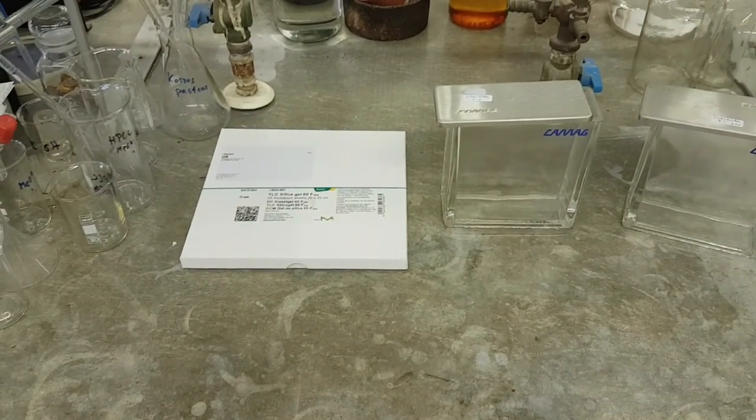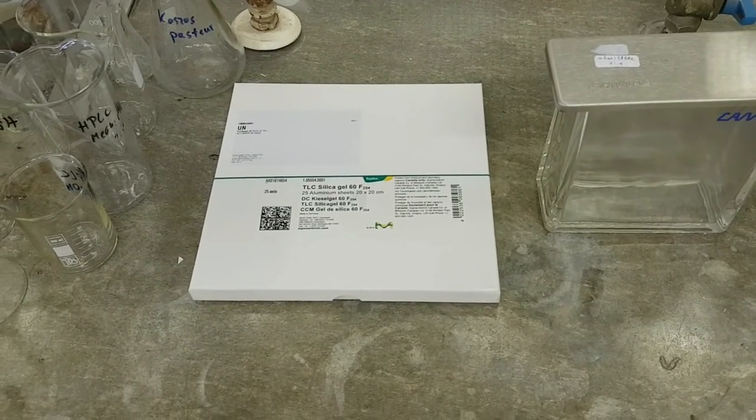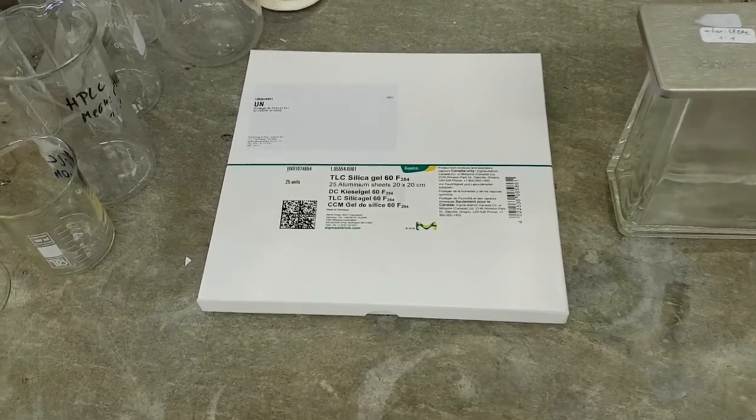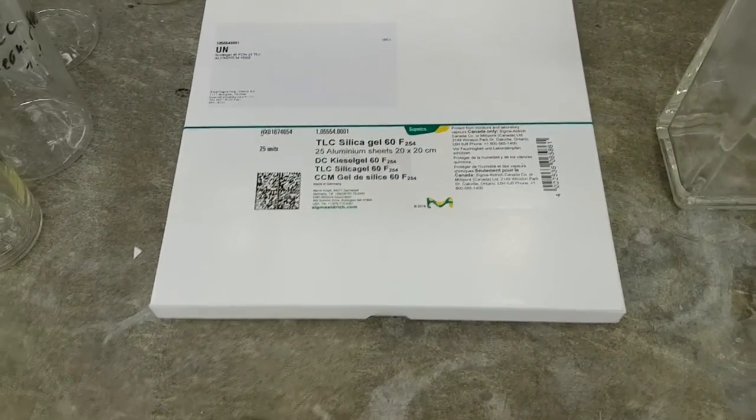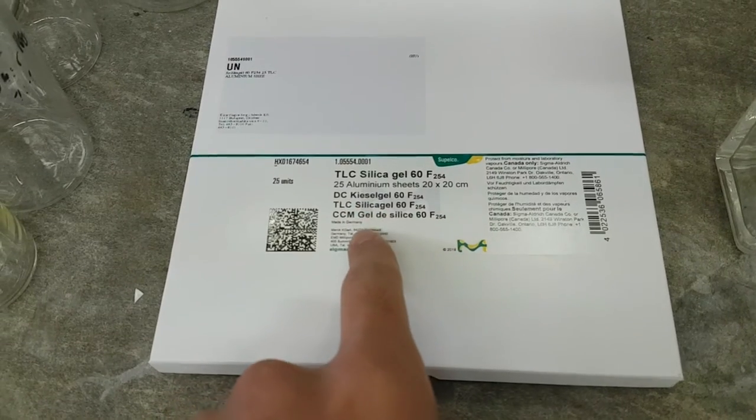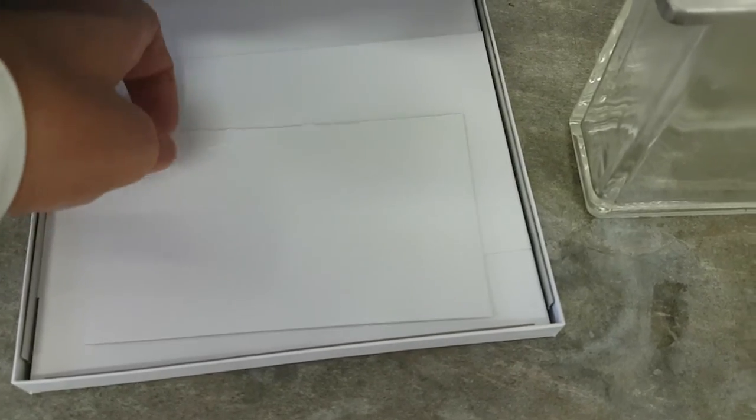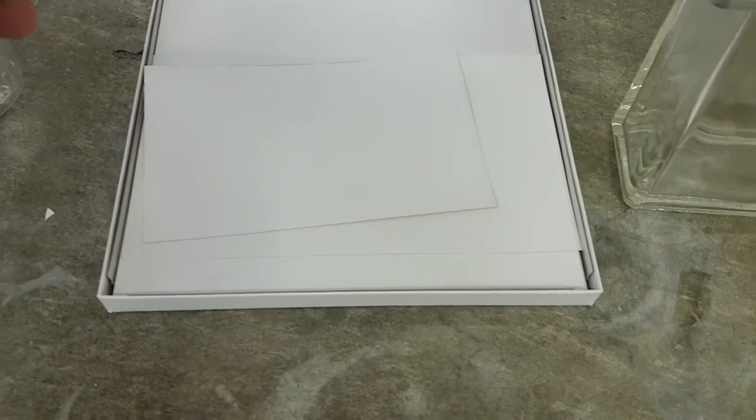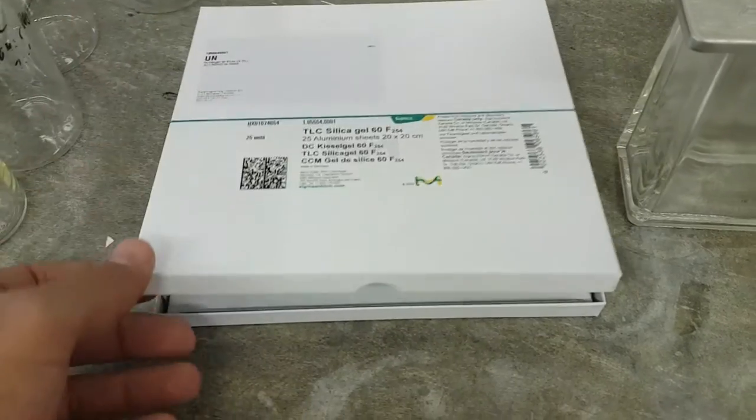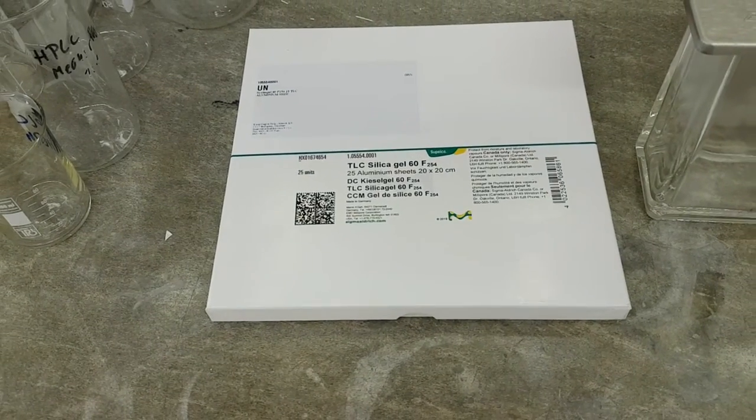Thin layer chromatography is considered an analytical method to make separations. First, we need a TLC plate, which you can get commercially. This plate is coated by silica gel 60F, or you can prepare it well, but it's better to obtain it commercially because it is well prepared and carefully made.